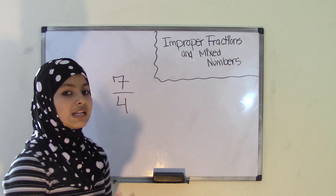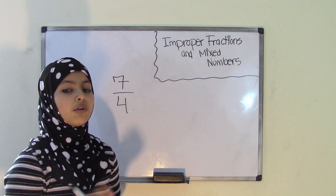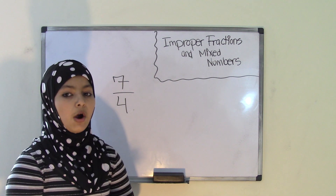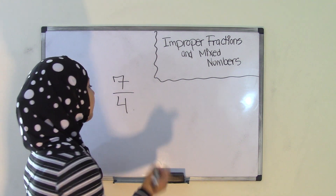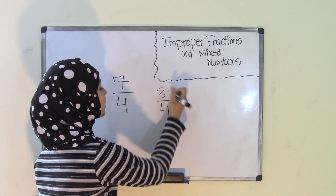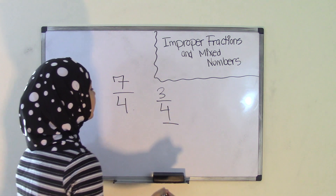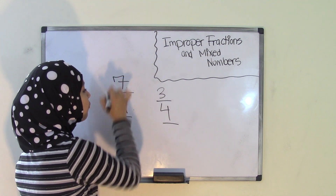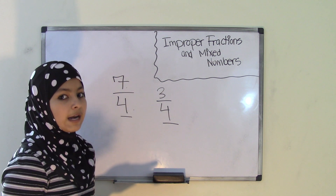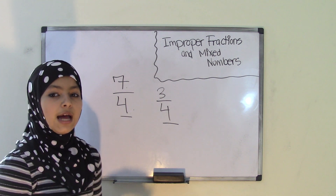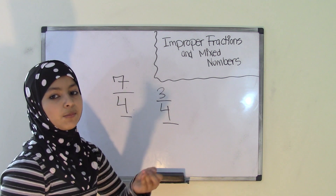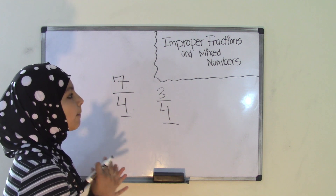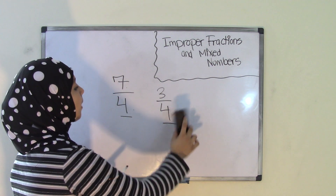Now 'improper' just means not proper. The reason it's not proper is because fractions are part of a whole. So a proper fraction could be 3 fourths because it's 3 parts out of a total of 4 parts. But in an improper fraction, you have a total of 4 parts but you have 7 out of 4 parts, which is sort of impossible. Because if you only have 4 parts, how can you have 7 parts out of those 4 parts? So that's why it's called an improper fraction — because it's not proper.